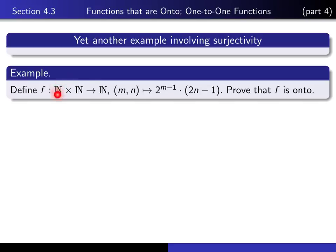Let's consider the function from the Cartesian product of the natural numbers with itself into the set of natural numbers. We're going to define f(m,n) to be 2^(m-1) times (2n-1), and the exercise is for you to prove that f is onto, that it is a surjective function.